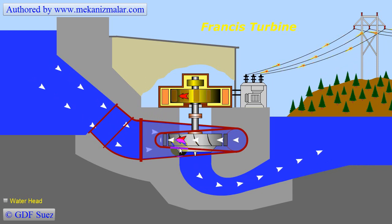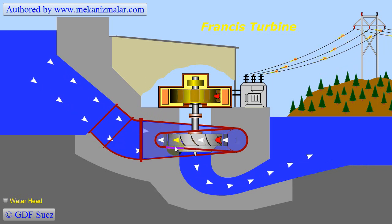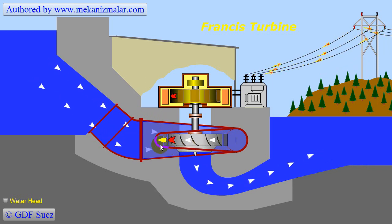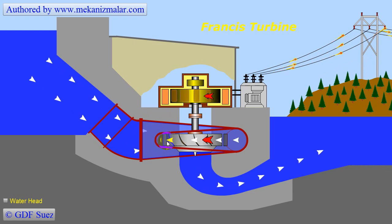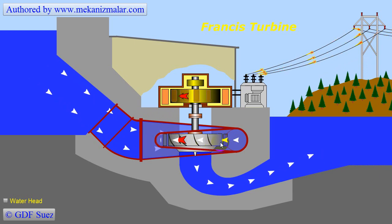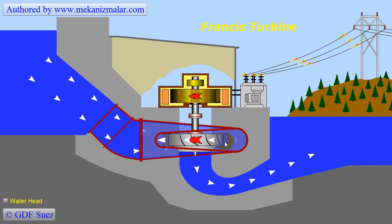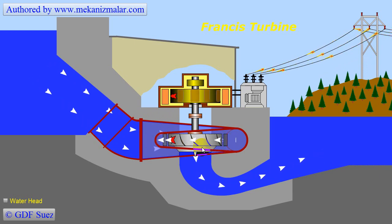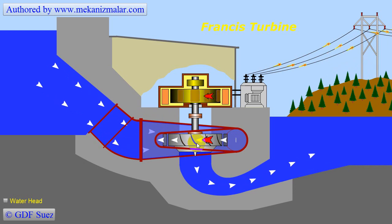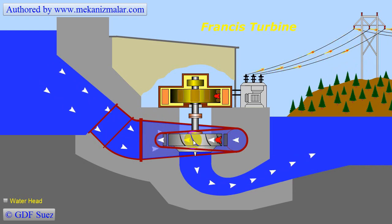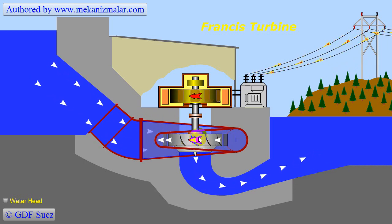This in effect controls the power output of the dam. Wicket gates also adjust the angle of the water reaching the runner. After passing through the wicket gates, the water reaches the runner.